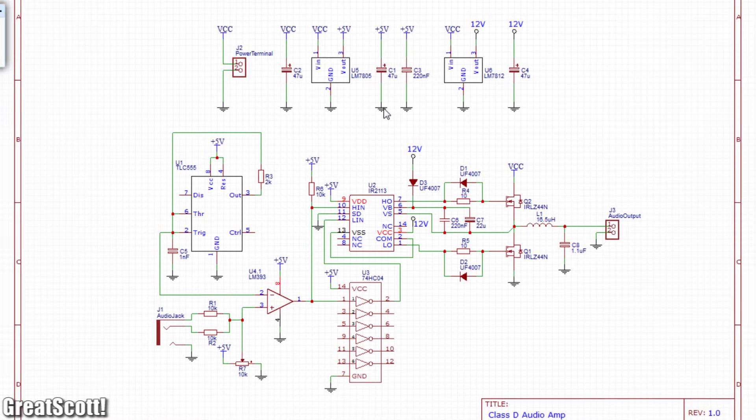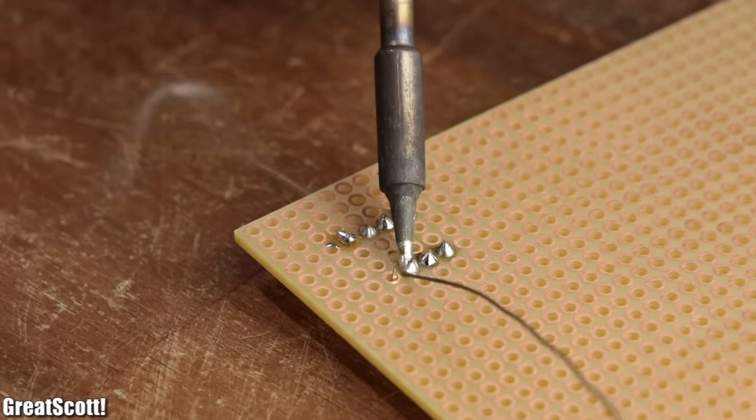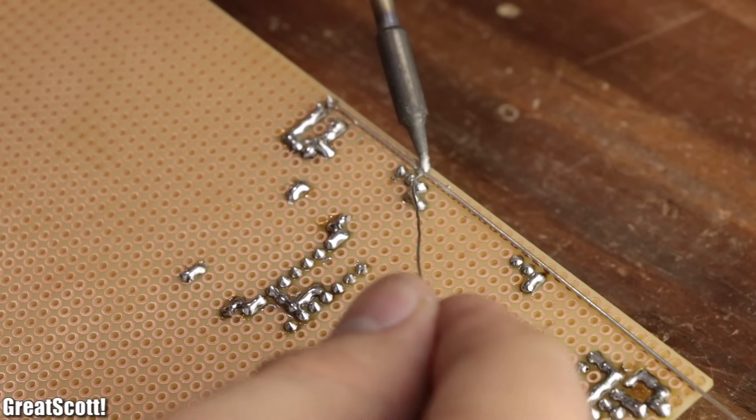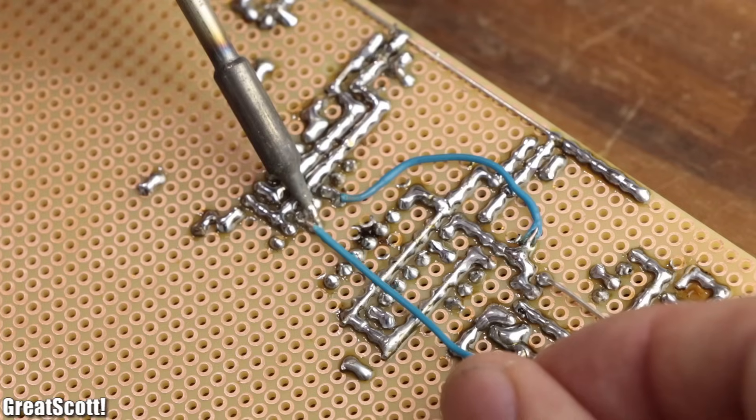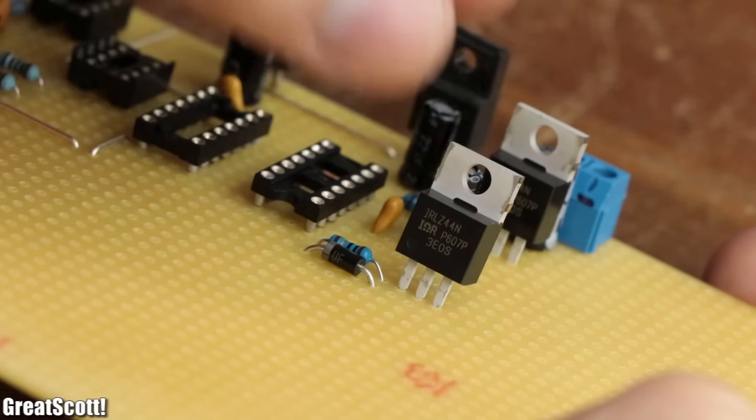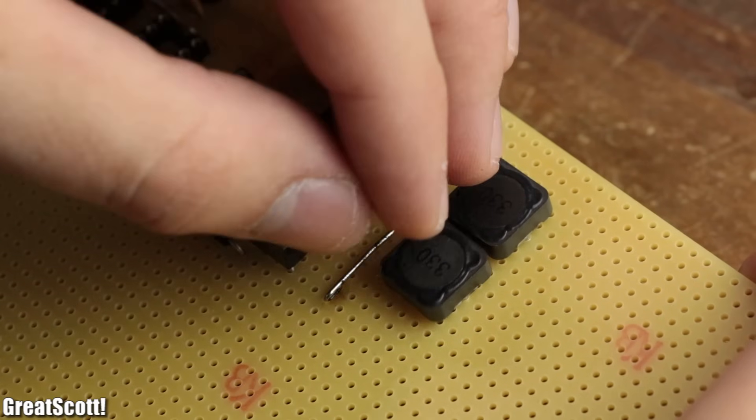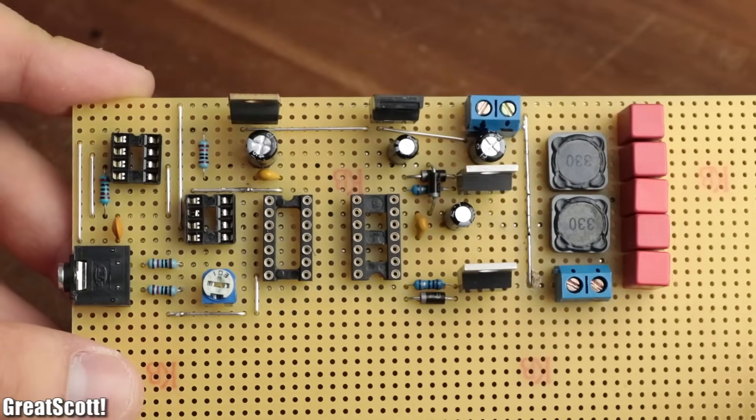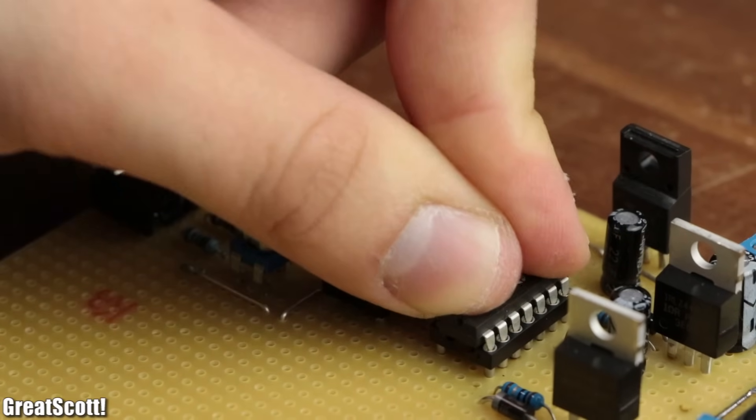And now that the schematic was complete, I gathered all the required components, and started soldering them to a piece of perfboard. As always, I tried to utilize silvered copper wire for the most part, but still had to use a bit of hookup wire at the end. And of course, you can find reference pictures of my perfboard layout, as well as the schematic for this project, in the video description. After three hours of soldering, the circuit was complete, and it was time to insert all the ICs, connect a 15V power supply to the input, and a speaker to the output.